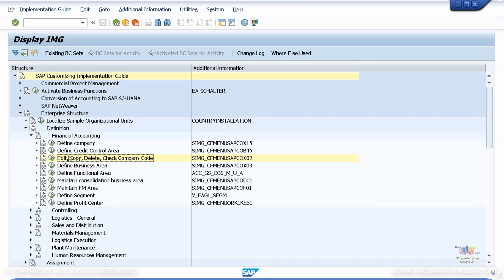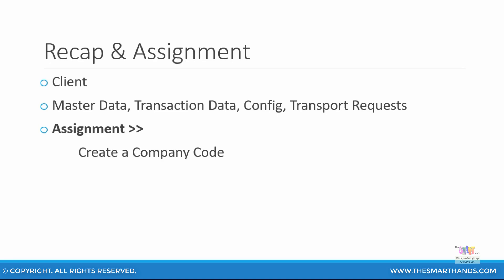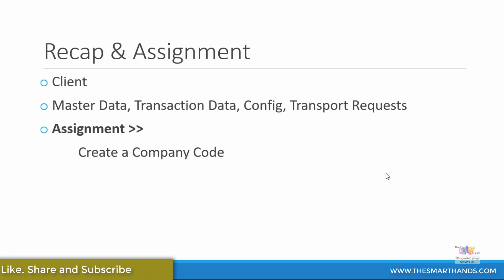You have successfully created your company code and you can go back and see it listed. You can also use the short transaction code OX02. In this presentation, we had a quick overview of what a client is and other terminologies related to master data, transaction data, configuration, and transport requests. The main organizational unit for financial accounting that we created was the company code, and we saw how to navigate the SAP IMG menu path. For your assignment, practice creating a company code — you can create multiple company codes to better understand how they are created in the system, going to Enterprise Structure, Financial Accounting, and creating your company code.